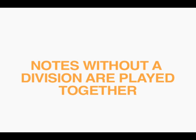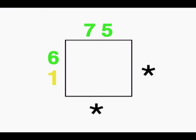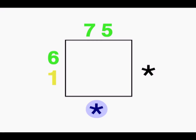When two or more notes are on the same beat or side without a line to divide, you play them at the same time. In this measure, we play five and seven greens on the first beat. On the second beat, six green and one yellow. And on the third and fourth beat, we have rests.